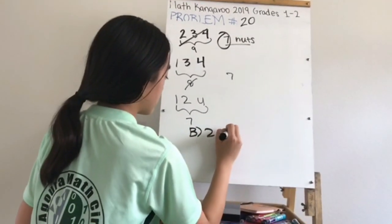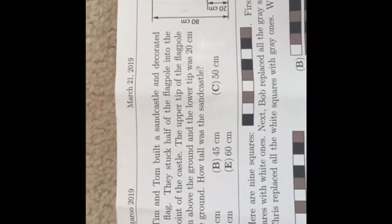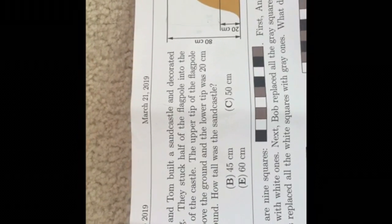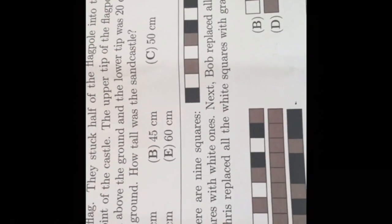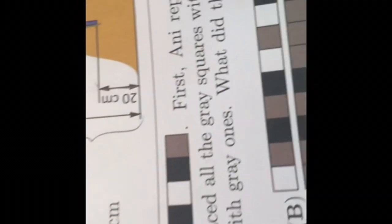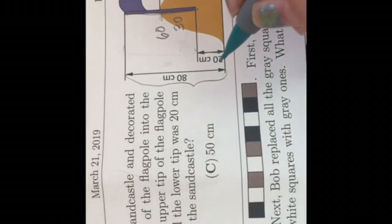Problem number twenty-one: half of a flagpole is stuck into a sand castle. The upper tip is 80 cm above the ground and the lower tip is 20 cm above the ground. The flag is 60 cm tall, so half is 30 cm. Adding 20 plus 30 gives the sand castle height of 50 centimeters — the answer is C.